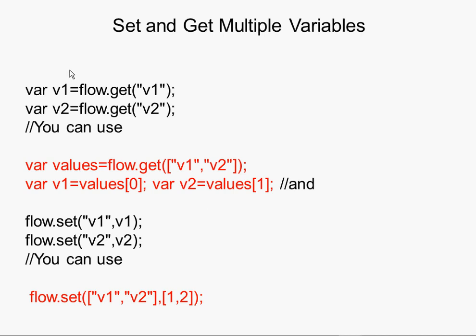To get a single variable before, you use this syntax: variable v1 is flow.get v1, and v2 flow.get v2. Now it's possible to get these two values in one command line - we just use this format: variable values flow.get, and notice this is an array, with v1 and v2. To retrieve them as v1 and v2 though, we have to go through this extra step: v1 equals values[0], the first element of the array, and variable v2 equals values[1], the second element of the array.